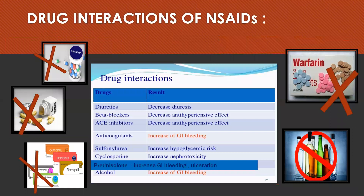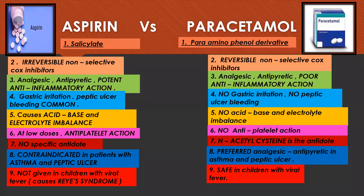Drug interactions of NSAIDs: when given with diuretics, they decrease the diuretic action. When given with beta blockers and ACE inhibitors, they decrease the antihypertensive effect. When given with anticoagulants and alcohol, they increase gastrointestinal bleeding. Hence, alcohol and anticoagulants should be avoided with NSAIDs.